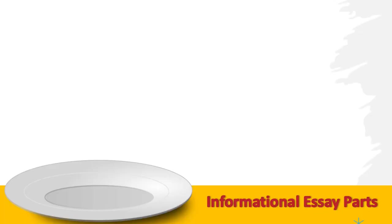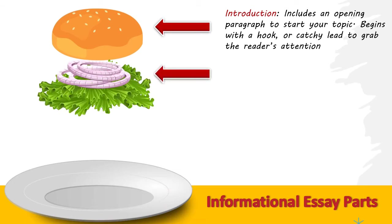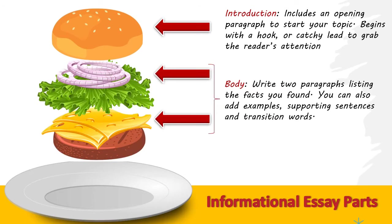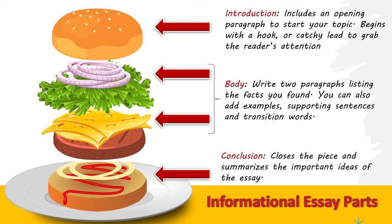An informational essay has three parts. The introduction includes an opening paragraph to start your topic and begins with a hook or catchy lead to grab the reader's attention. The body goes next — write two paragraphs listing the facts you found. You can also add examples, supporting sentences, and transition words. This is the most important part of your essay because it shows what you know about the topic. The conclusion closes the piece and summarizes the important ideas of the essay.